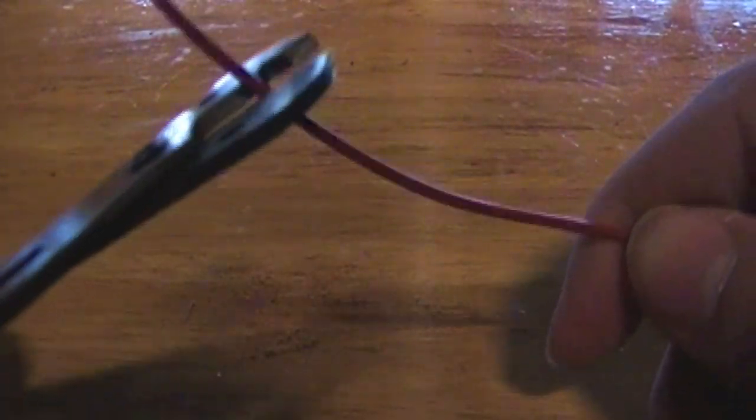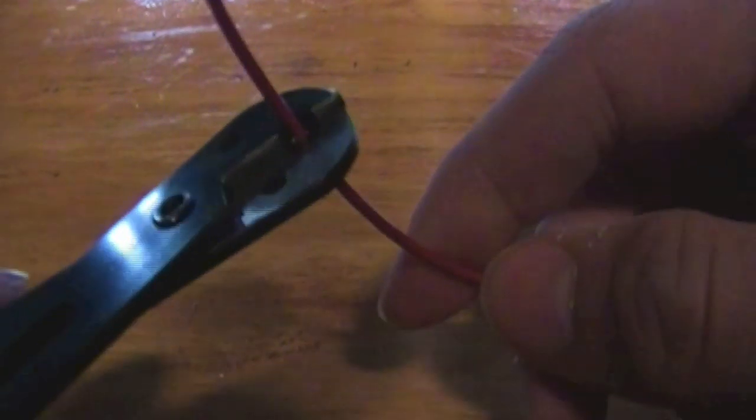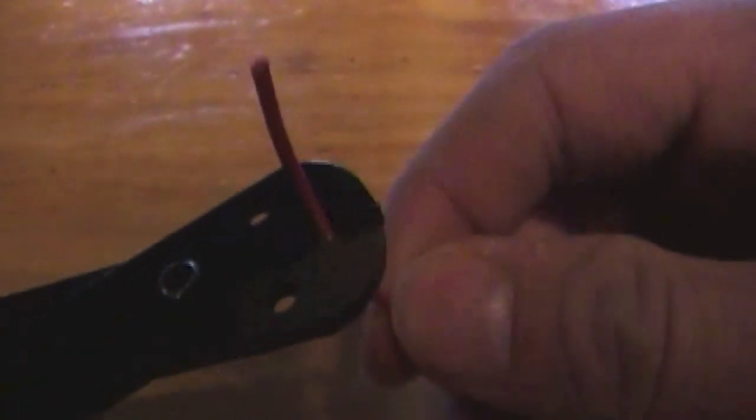Then once that's done, basically you're just going to take the plastic off your copper wire. It shouldn't be that hard, it just takes a little while. And then once you're done, it should look a little like this.